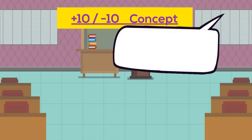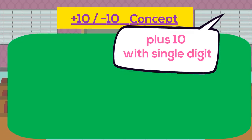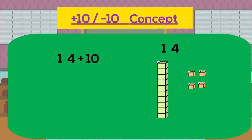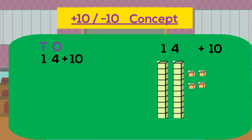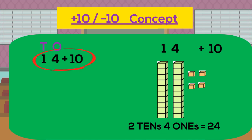First tip: plus 10 / minus 10 concept. Here we will talk about two-digit numbers. For plus 10 with single digit, we have already covered that in a previous video. Let's take 14 plus 10. The logic is: 14 means one 10 and four ones — four is in the ones position and one is in the tens position. Plus 10 means one more ten comes to join, so the answer is two tens and four ones, that is 24. Whenever a child sees any two-digit number plus 10, she simply has to add one in the tens place and will get the answer in seconds.